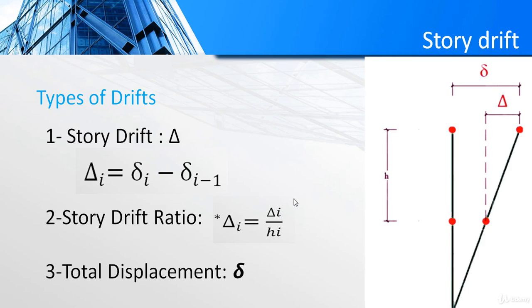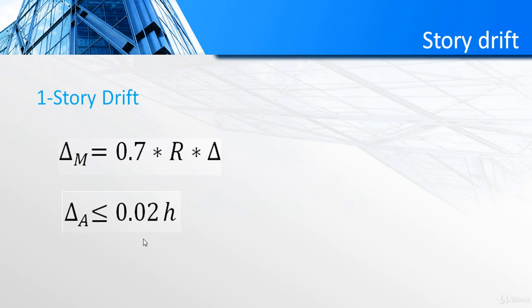In this lesson we are going to talk about story drift according to the UBC code. We have three types of drifts: the first one is the story drift, which is the lateral displacement of one level relative to the level above or below. The second type is the story drift ratio, which is the story drift divided by the story height. The last one is the total displacement.